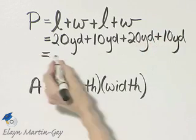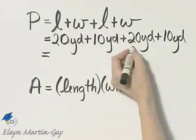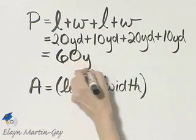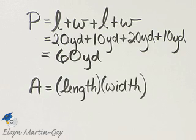And now let's find that sum. 20 plus 10 is 30, plus 20 is 50, plus 10 is 60. So the perimeter, or the distance around, is 60 yards.